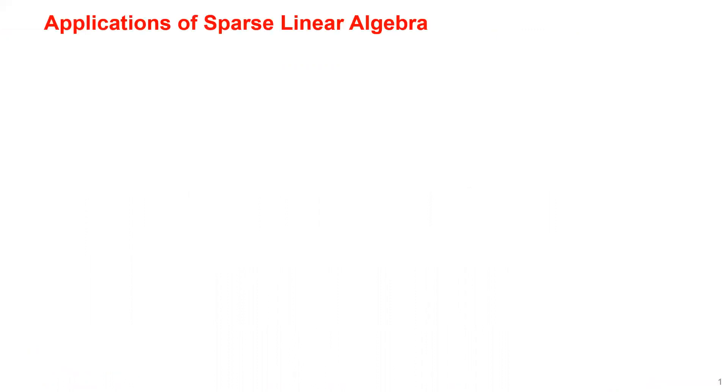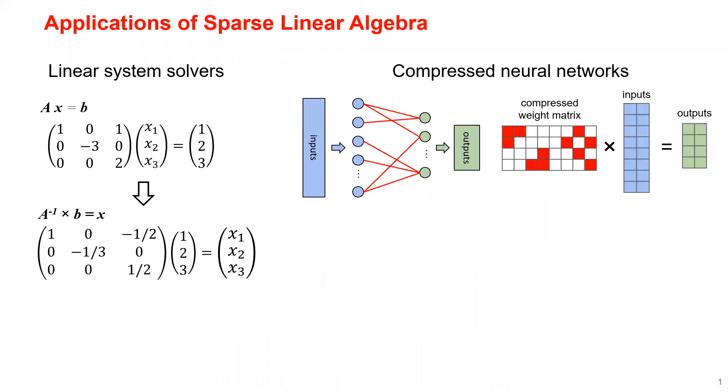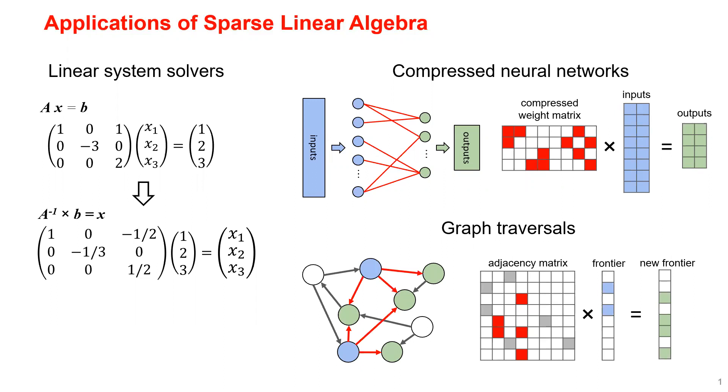Sparse linear algebra has a broad range of applications. For example, we can use it to solve a linear system of equations. It can also be used in the inference of compressed neural networks, where the weight matrix is pruned into a sparse matrix. It also plays a role in graph traversals such as breadth-first search, where the adjacency matrix is sparse.